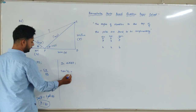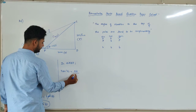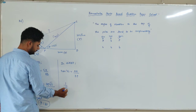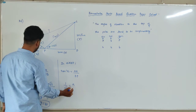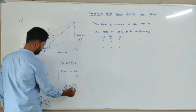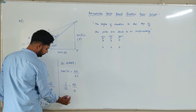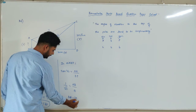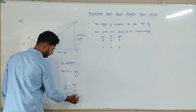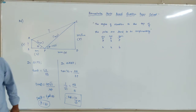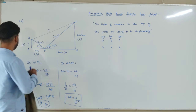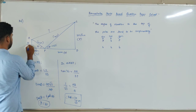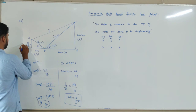So again I should go with tan. Tan 30 degrees equals perpendicular by base; perpendicular is AB and base is BP. Tan 30 equals 1 by root 3, equals AB over BP. BP is 10, so AB equals 10 by root 3 meters. This is the answer — AB equals 10 by root 3 meters. This is our perpendicular.